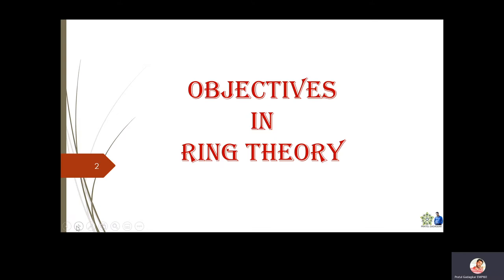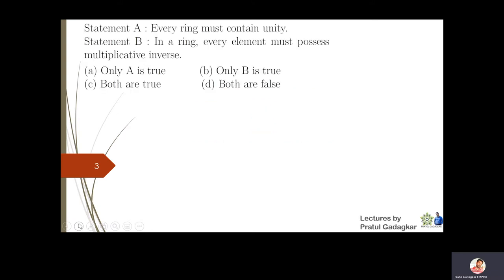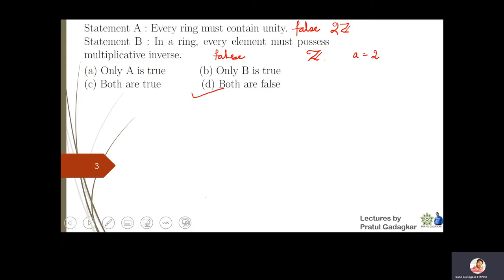We will solve the second set of objectives in ring theory. The first question: statement A is every ring must contain a unity, and statement B is every element in a ring must possess a multiplicative inverse. Taking the example of ring 2Z, this ring does not contain a unity, so statement A is false. For statement B, the ring of integers has element a=2 which has no multiplicative inverse, so statement B is also false. Both statements are false.